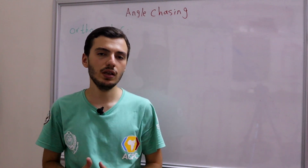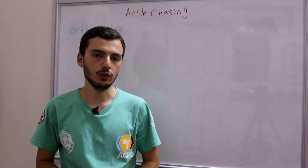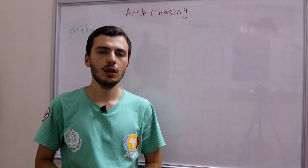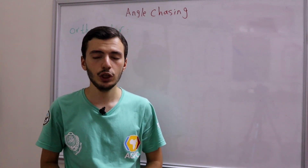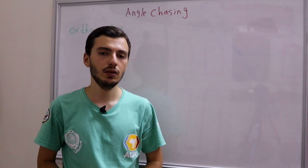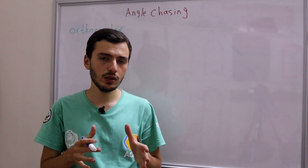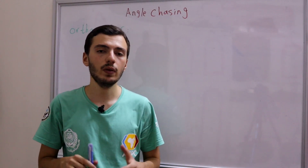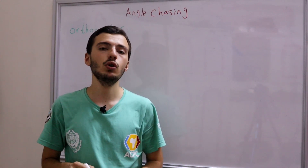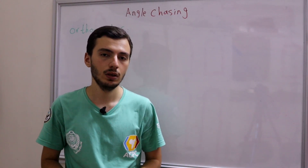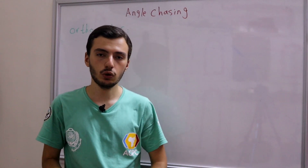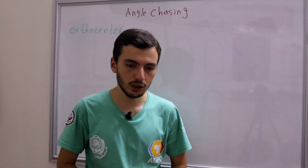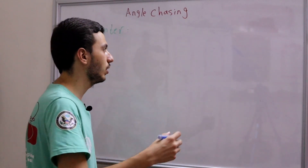So what is the orthocenter? The orthocenter has a very simple definition: it's the concurrency point of the three altitudes of triangle ABC. So let's simply draw a triangle ABC first.